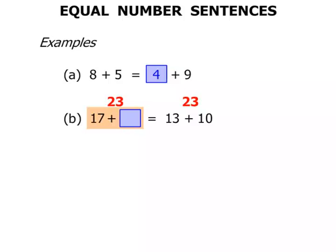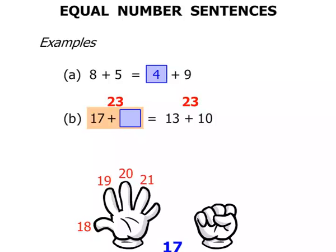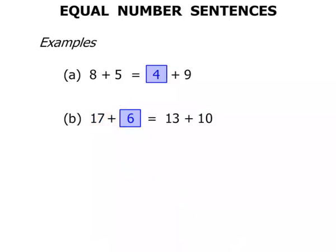So 17 plus something is 23. Look, if you know the answer, great. If not, let's use our hands. We're thinking 17, we need to get to 23. So let's think 17, 18, 19, 20, 21, 22, 23. We needed to add 6 to get that answer. Terrific.